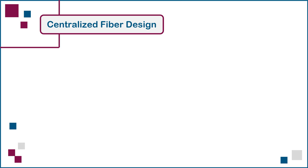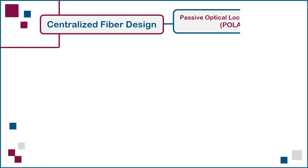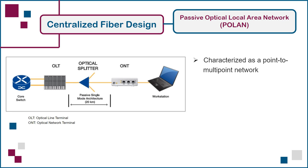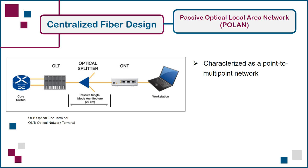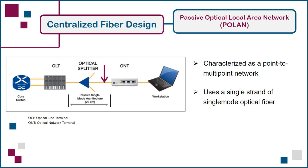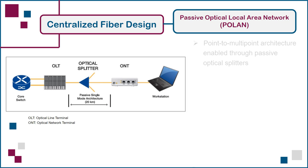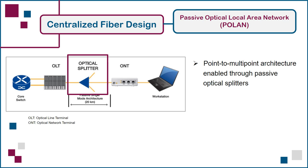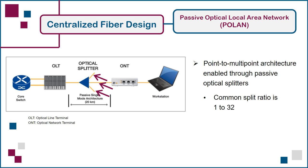Next, we'll take a closer look at a network architecture based on centralized fiber cabling, called Passive Optical Local Area Network or POLAN. A POLAN is characterized as a point-to-multipoint network, used in place of the more familiar point-to-point network layout, where one switch port connects to one end device, such as a desktop phone, a wireless access point, or a laptop computer. Unlike most network connections that use a four-pair balanced twisted-pair copper cable or a two-strand multimode fiber cable, a POLAN connection operates over a single strand of single-mode fiber. The point-to-multipoint architecture is enabled through passive optical splitters that split or combine wavelengths so that one single-mode fiber strand from a building's distributor room branches out to multiple work area devices. A common split ratio is 1 to 32.